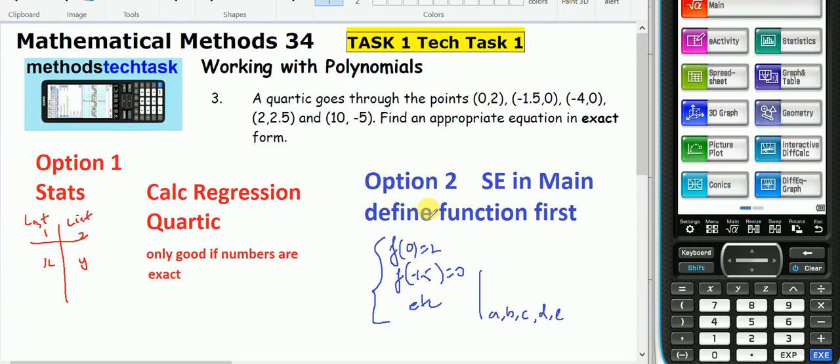This is for mathematical methods, the orientation tech task number one, question number three. How do I find the equation according to go through these five points? The answer has to be in exact notation.